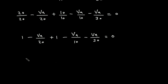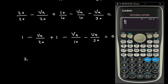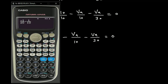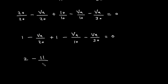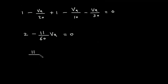So 1 plus 1 gives 2. The VA coefficients are minus 1/20, minus 1/10, and minus 1/30. Combining these fractions gives minus 11/60. So the equation becomes 2 minus (11/60)VA equals 0.